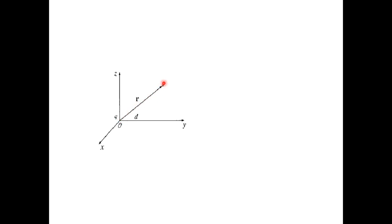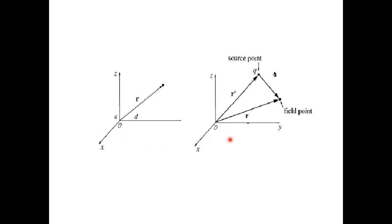We call the point where we calculate the strength of the electric field a field point. In the second figure, we discuss the position of the charge and the position where the field is to be calculated with respect to the origin. Here the charge is at a distance R prime from the origin, and we calculate the electric field at a distance R from the origin. The distance between the source point and the field point is represented by the vector R minus R prime. It is clear that the charge may or may not lie at the origin.